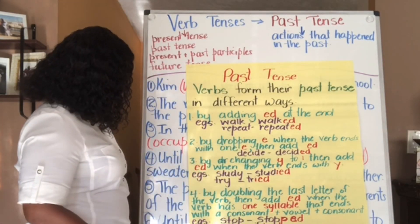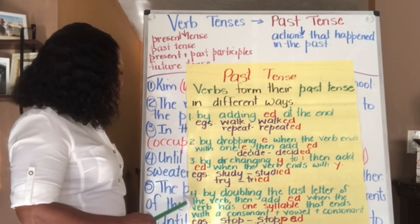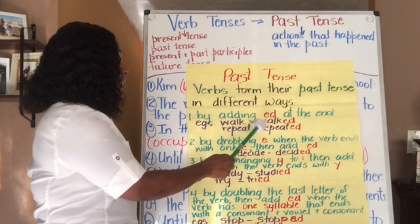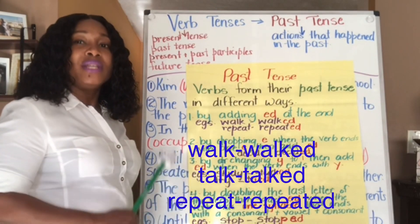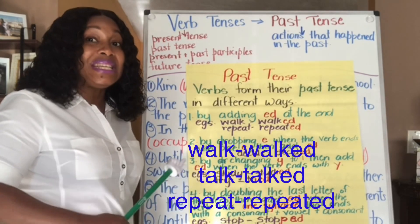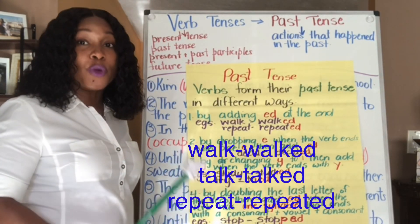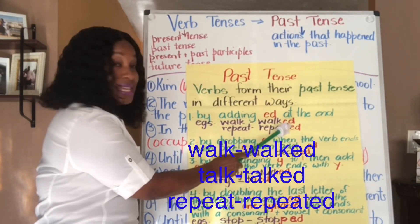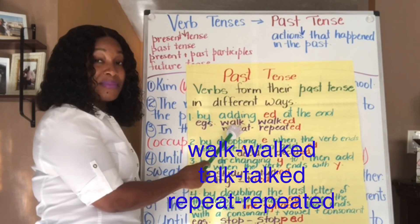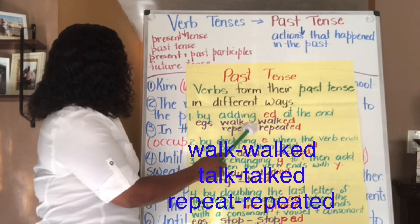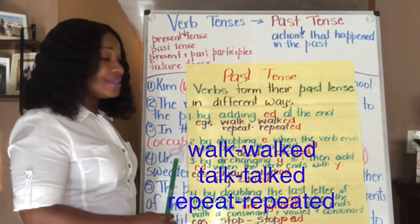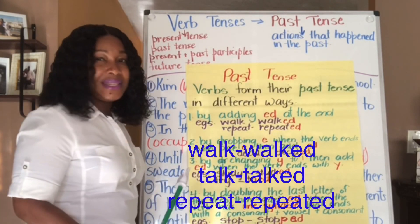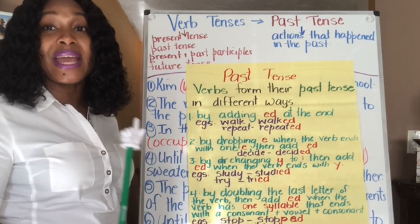Here I have a chart showing four different ways in which verbs form their past tense. The first is by adding ED at the end of the verb. For some verbs, we simply just add ED, and that's it — most verbs form their past tense this way. For example, 'walk' — we just rewrite the word and add ED, so 'walk' in present tense becomes 'walked' in past tense. Similarly, 'repeat' — we write the word and add ED. That's the simplest form.